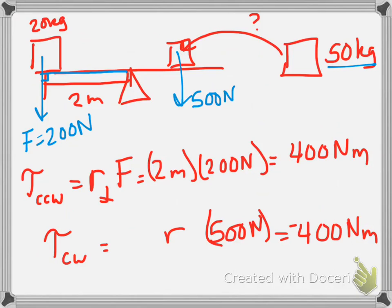So here we'll actually solve for R, and R would be 400 divided by 500, or basically 0.8 meters.